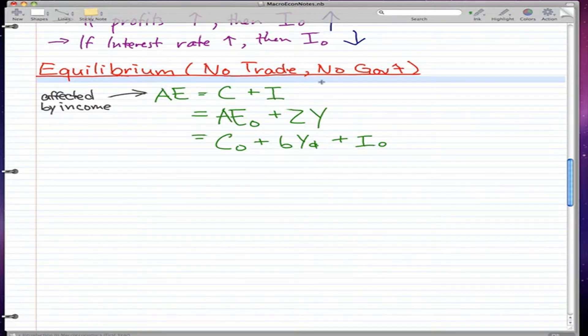With no trade and no government, AE is equal to AE₀ plus ZY, right?